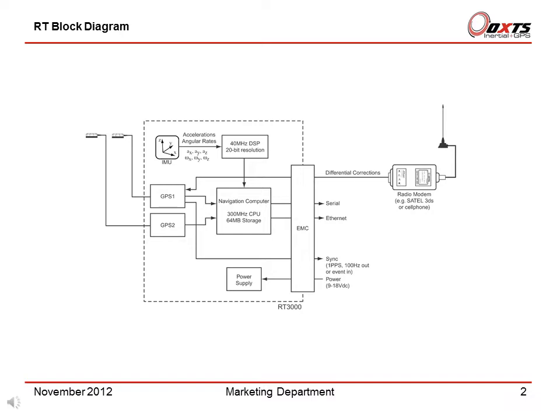The second GPS card is used to improve the heading. The navigation computer receives the data from the IMU and the GPS receivers, and processes the data from the inertial sensors to give outputs such as position and velocity. It also runs the Kalman filter which provides corrections to the outputs, for example errors. The radio modem is used on the higher accuracy products to give differential corrections to the GPS cards. The RT beacon can also provide differential corrections.